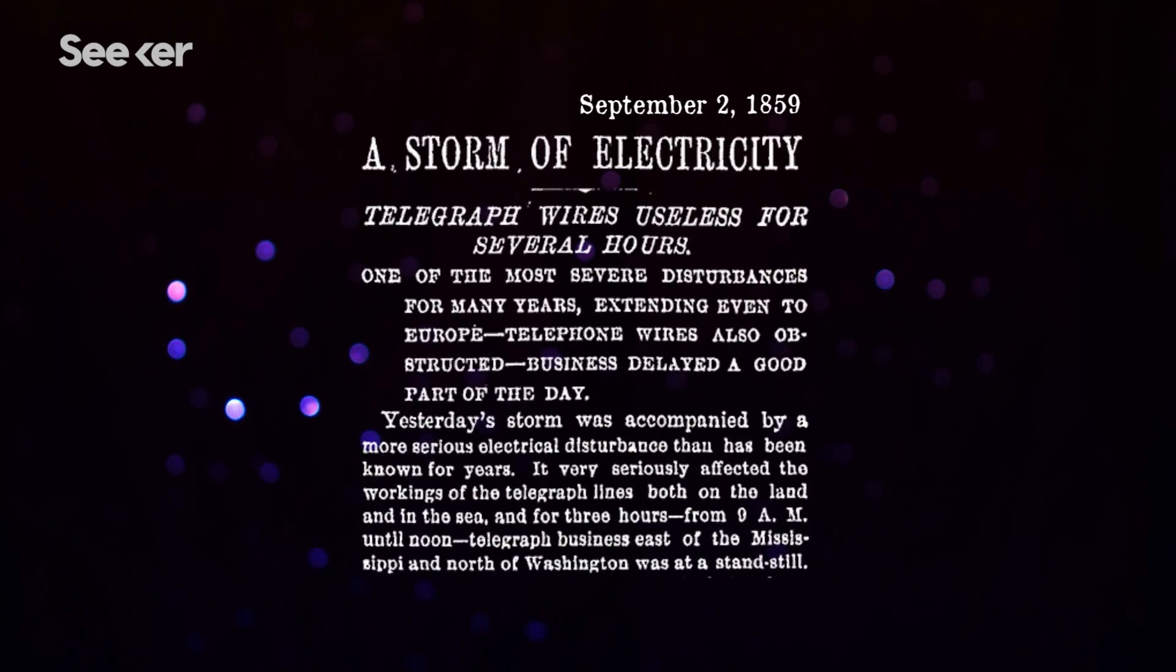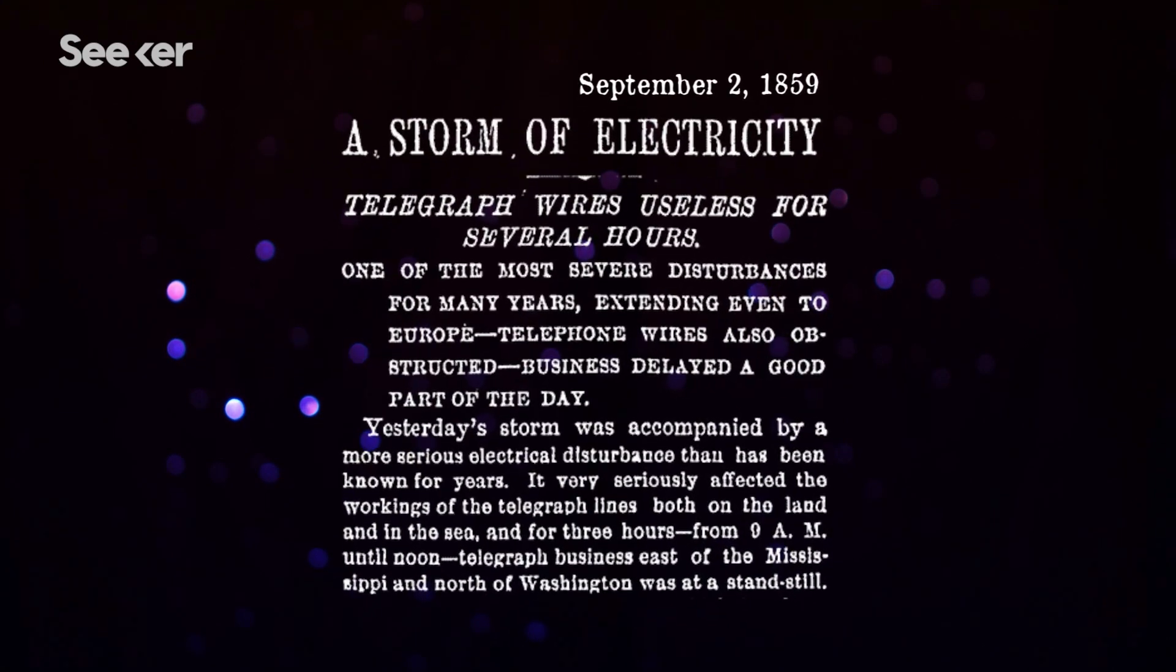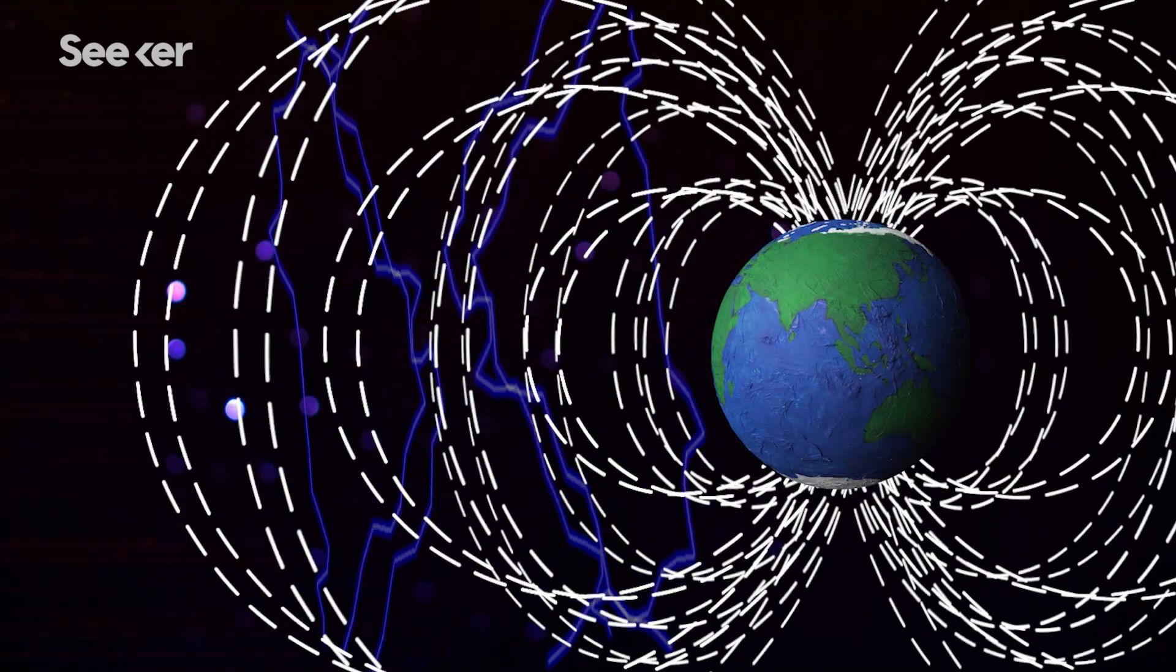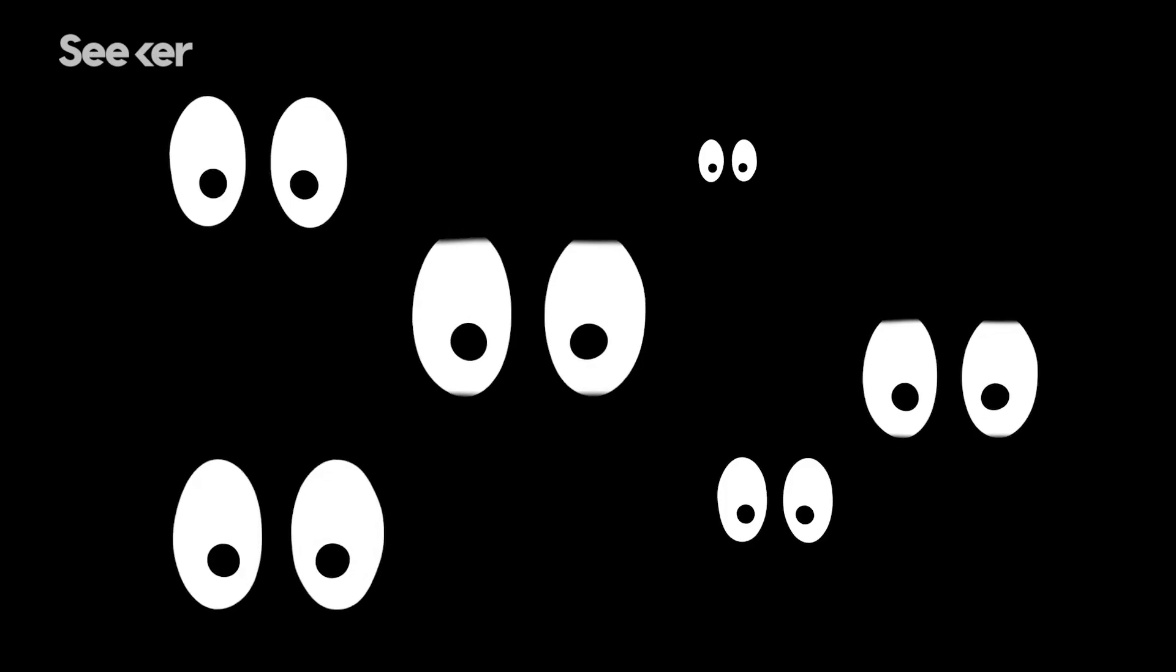Yikes! Last time this happened was in 1859, and the impact triggered a geomagnetic storm in our magnetosphere. And if that were to happen today, the storm could fry our power grid, leaving us all in the dark.